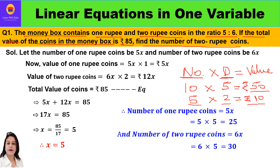They are saying the money box contains 1 rupee and 2 rupee coins in the ratio of 5 is to 6. So we will let the number of 1 rupee coins be 5x and the number of 2 rupee coins be 6x. The value of 1 rupee coins will be number multiplied by 1, that is 5x into 1, which is 5x.